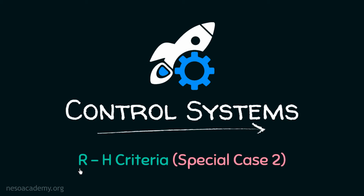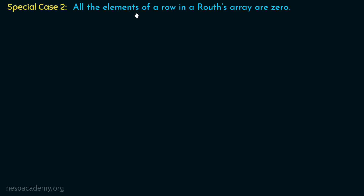In the previous lecture, we discussed the special case 1 of RH criteria. Now in this presentation, we will discuss the special case 2 of RH criteria. So let's get started. The special case 2 in RH criteria occurs when all the elements of a row in a Routh array are 0.